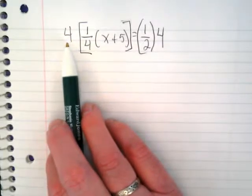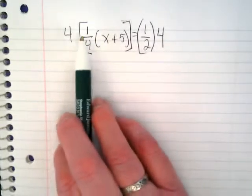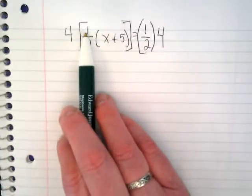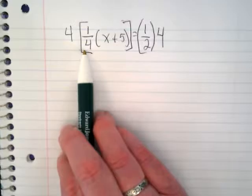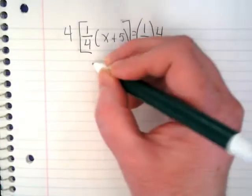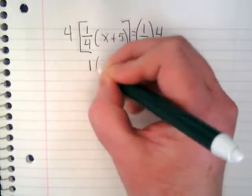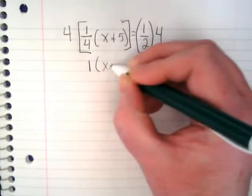So I want you to look at what I've got here. I'm going to multiply 4 times 1 fourth. What's 4 times 1? 4 divided by 4 is 1. And that's going to be rewritten here as 1 times x plus 5.